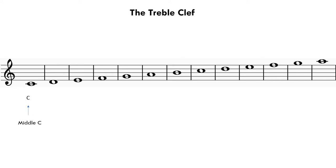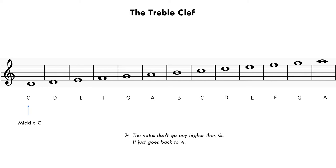After C we have D, E, F, G, A, B, C, D, E, F, G, and then finally we've got A. As you can see, the notes don't go any higher than G — when we do get to a G we just start from A again. To make this easier I'm going to show you the notes just in the spaces and just on the lines. You can always go back to where the notes are all together when you have more confidence, but for now we'll just start with the spaces.